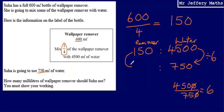So that means I'm going to need to do exactly the same to my wallpaper remover. So 150 divided by 6 gives me an answer of 25. So how many milliliters of wallpaper remover should Sewer use? My answer here is going to be 25.